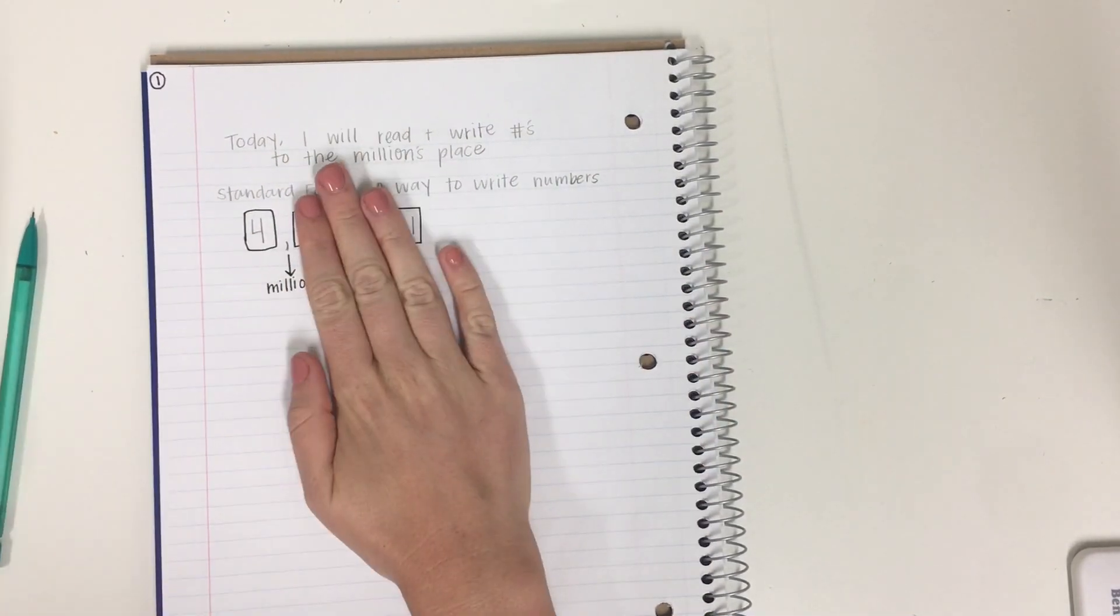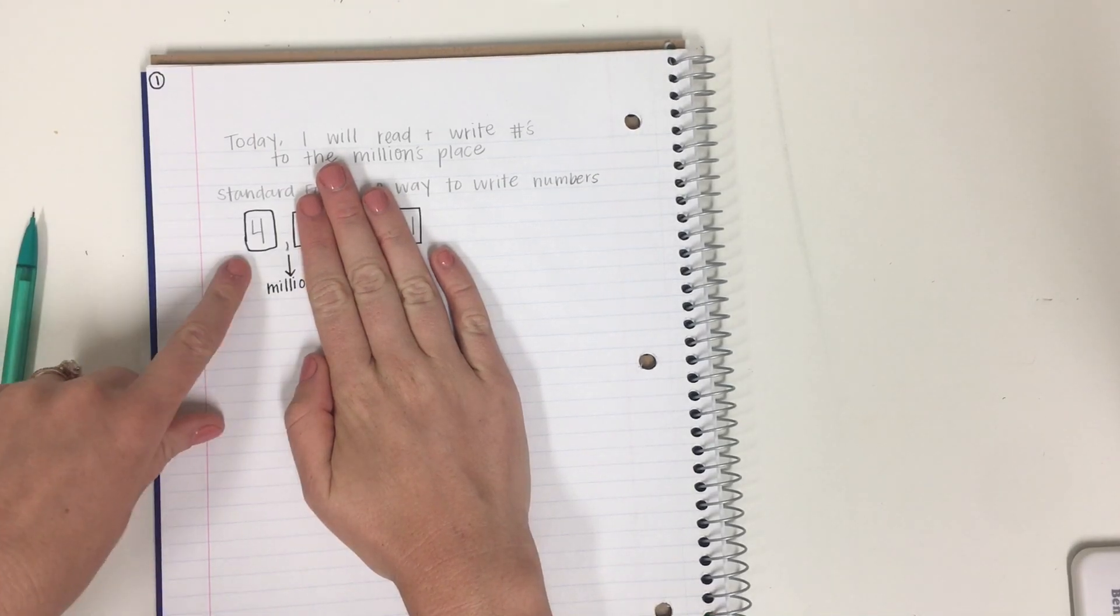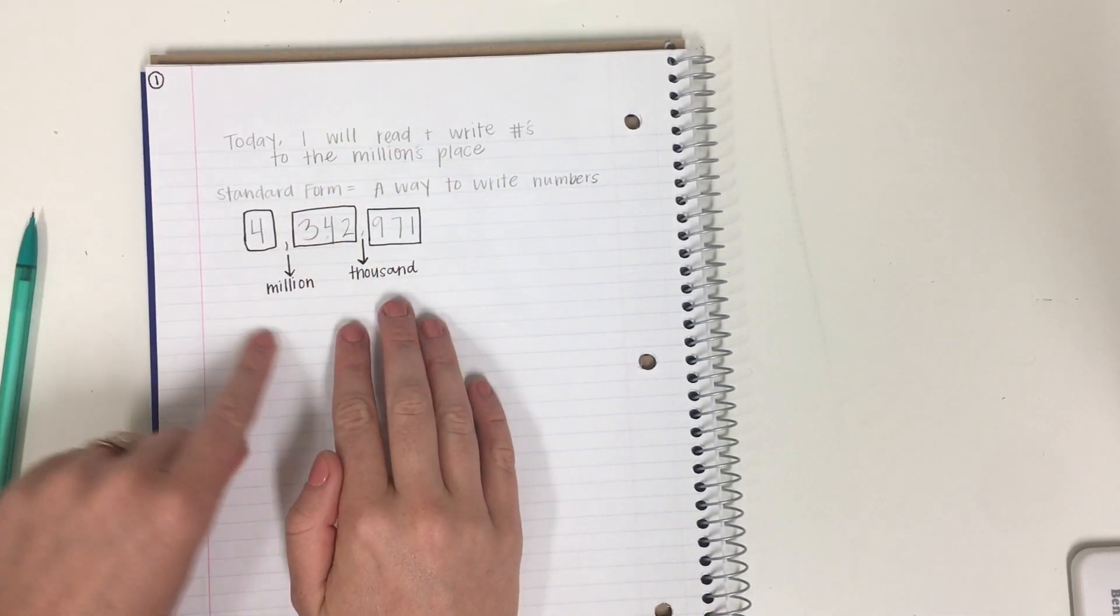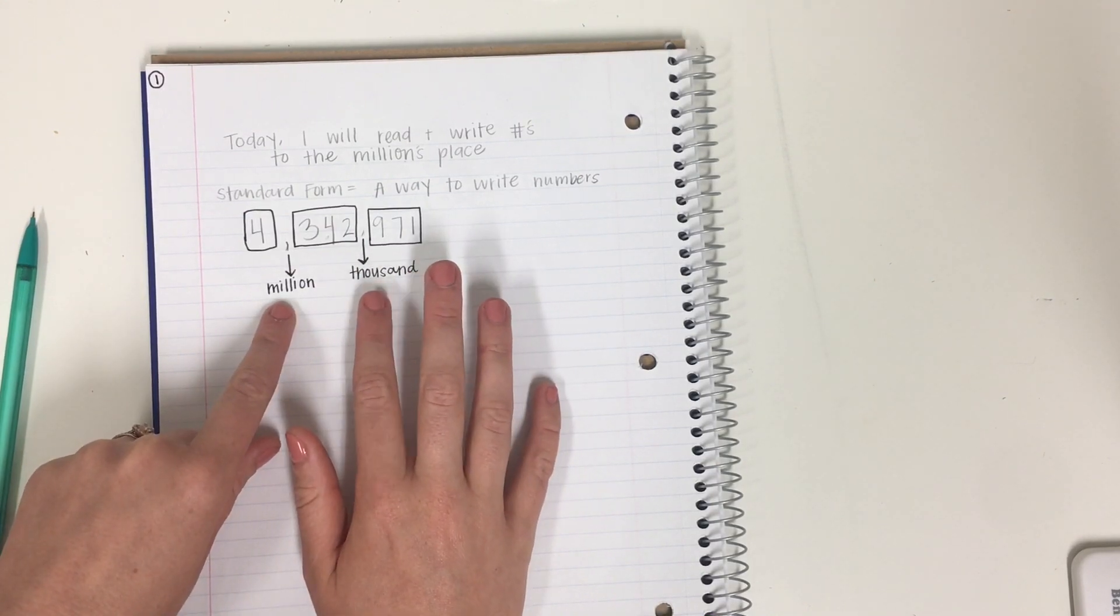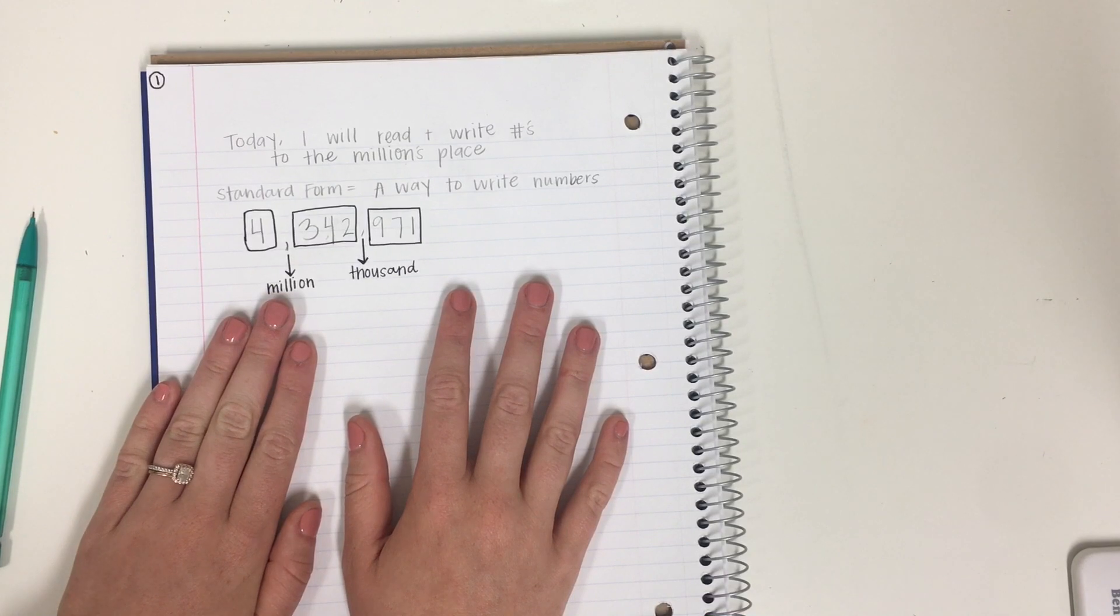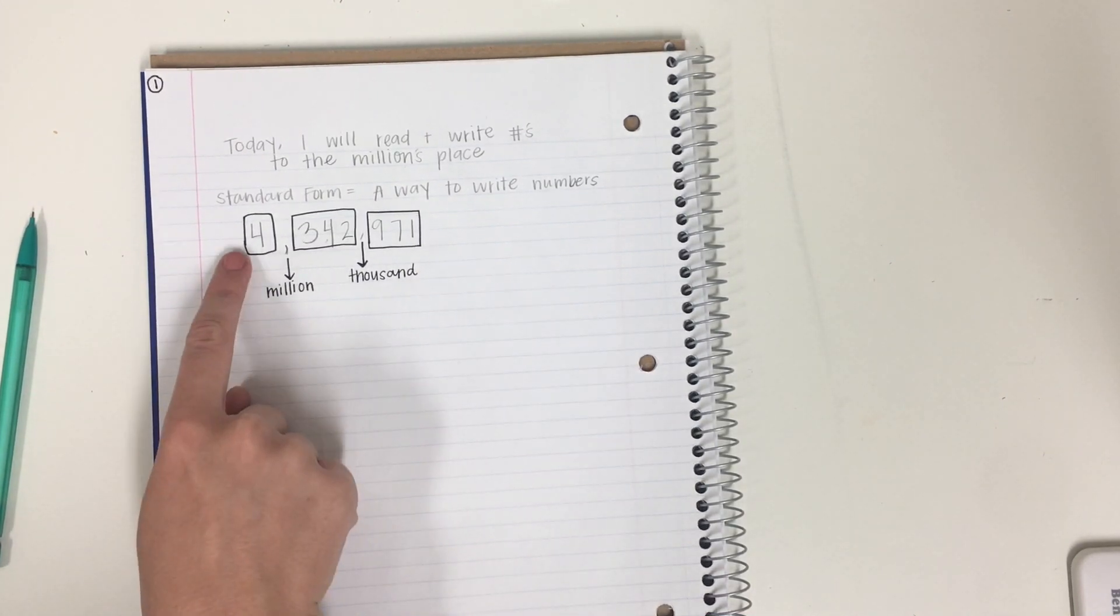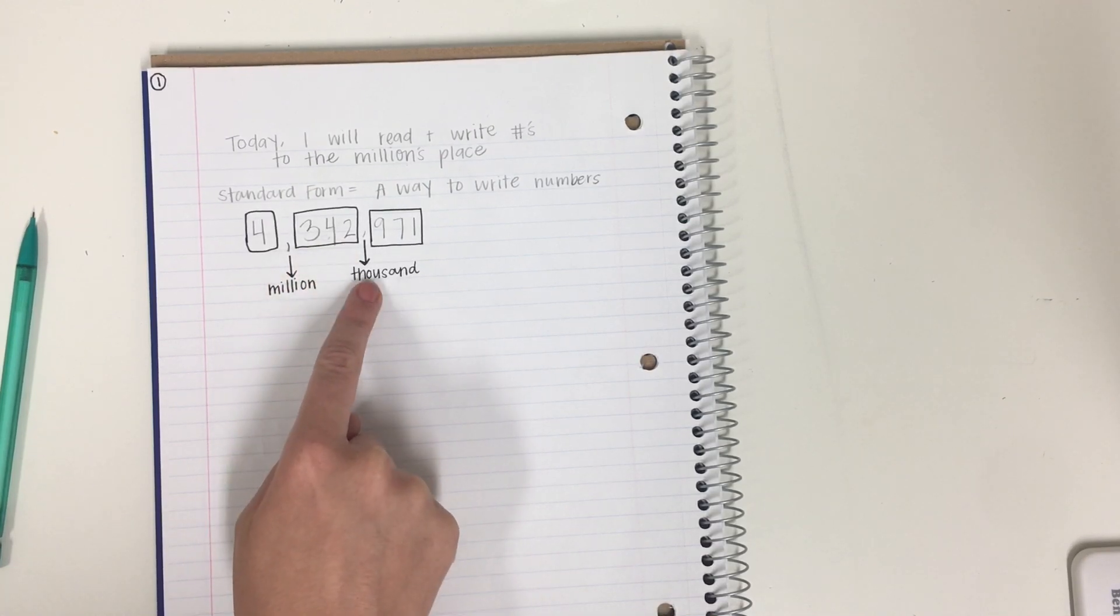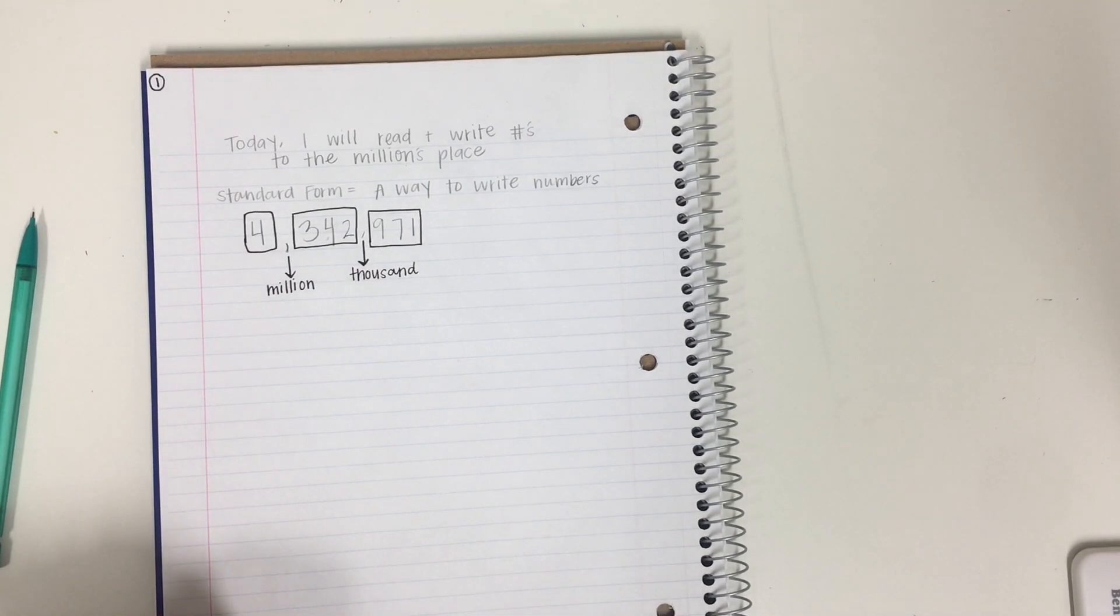Okay? So we know that if we take away all these numbers, we know how to say this number. It's 4. So now that we know what these commas stand for, it will help us to remember how to say the word in standard form. So I can read it like this. 4,342,971.